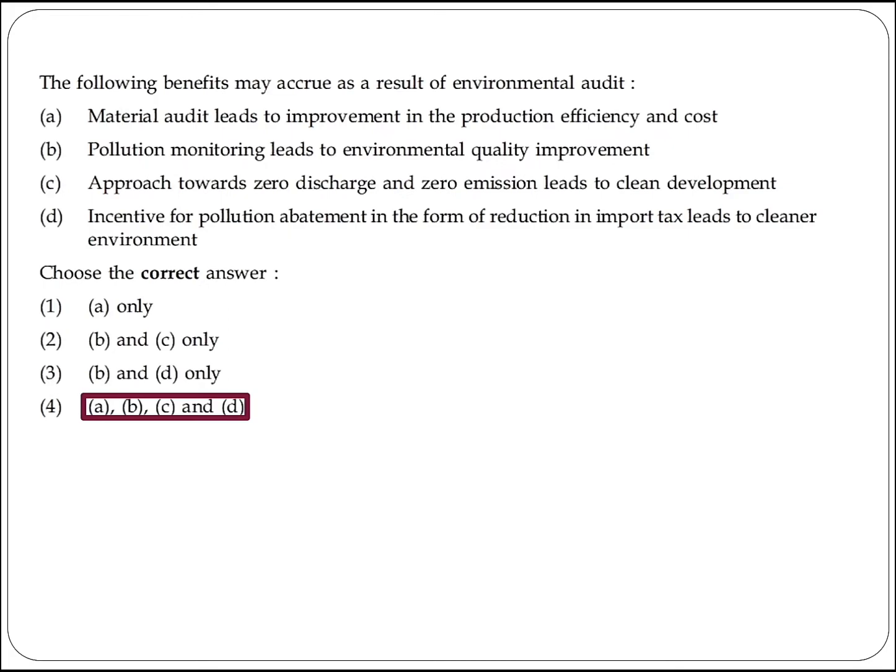The next question asks about benefits that may occur as a result of environmental audit. Material audit leads to improvement in production efficiency and cost. Pollution monitoring leads to environmental quality improvement. An approach towards zero discharge and zero emission leads to a clean environment. Incentive for pollution abatement in the form of reduction in import tax leads to a cleaner environment. Option 4 is the right answer.